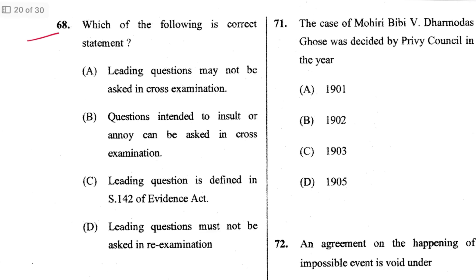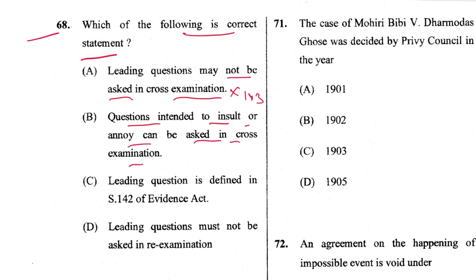Question 68: Which is the correct statement? Leading questions may not be asked in cross-examination — wrong, they are asked in cross-examination per Section 143. Questions intended to insult or annoy can be asked in cross-examination — wrong. Leading question is defined in Section 141 — wrong. Leading questions must not be asked in re-examination — correct. D is the answer.